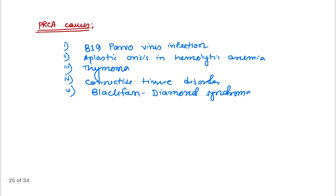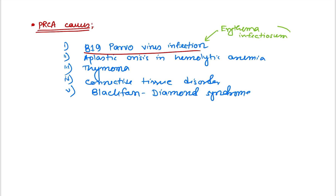Pure red cell aplasia can also be caused by parvovirus B19. Parvovirus B19 causes erythema infectiosum in children, also called fifth disease, identified by the slapped cheek appearance in children.